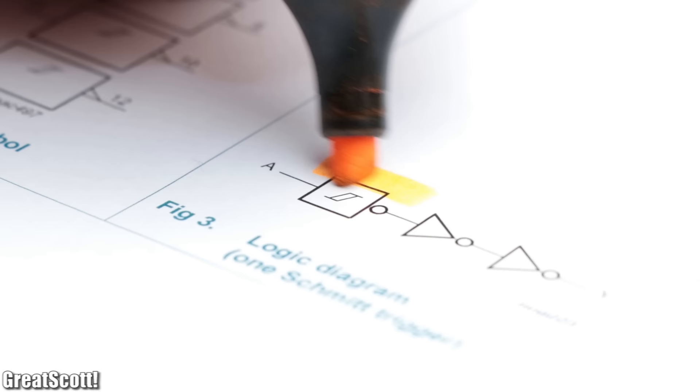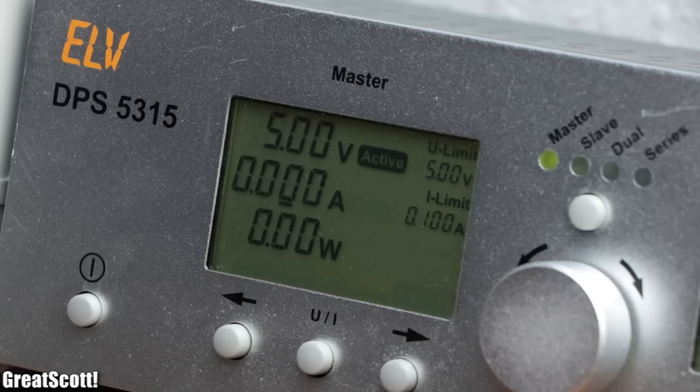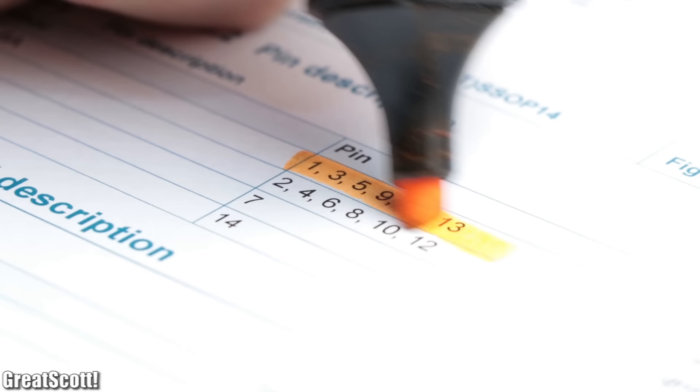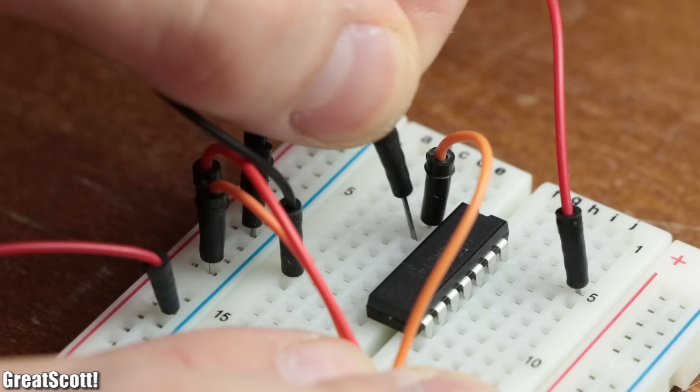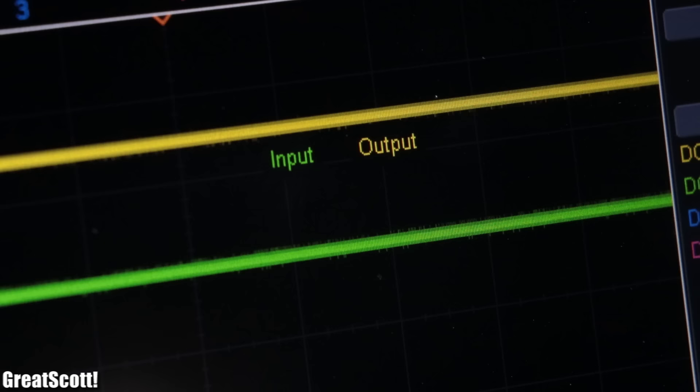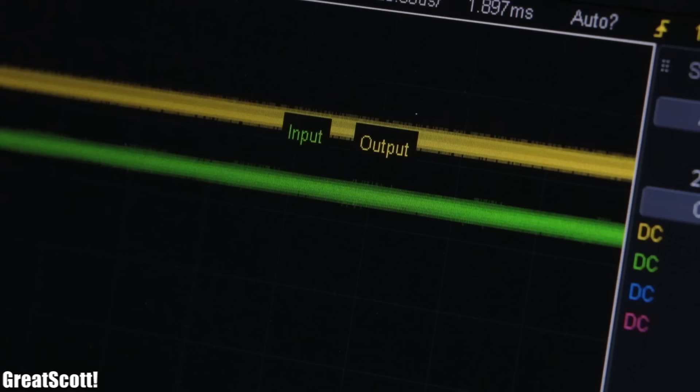First off, its datasheet tells us the universal symbol of a Schmitt trigger. And after connecting the IC to a supply voltage of 5 volts, we can connect our to-be-monitored voltage to one of the six data input pins and observe the Schmitt-triggered signal on its corresponding data output pin, which is obviously due to the name of this IC inverted. But don't worry—if we put two of them in series, then we can get rid of this inversion.